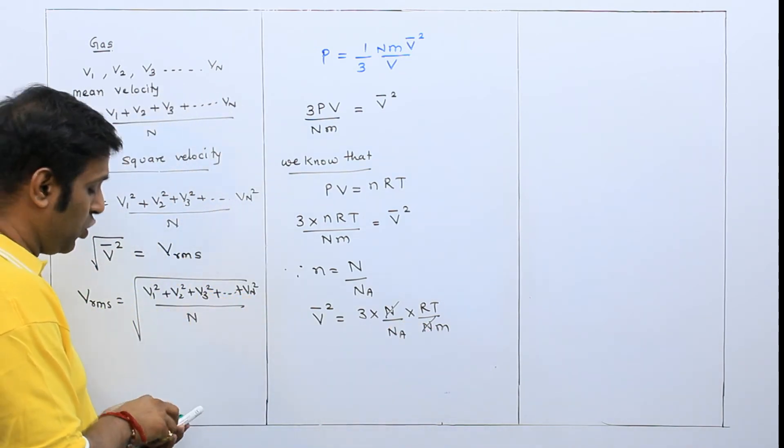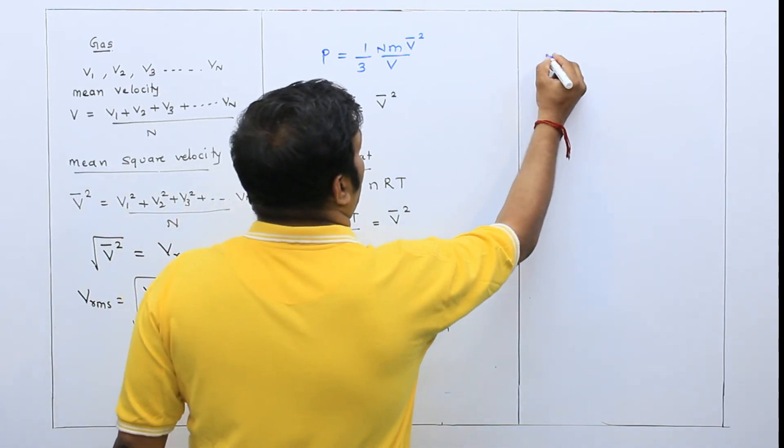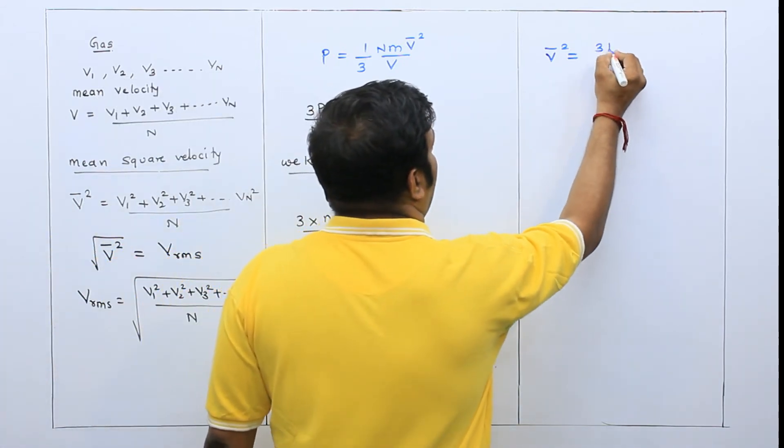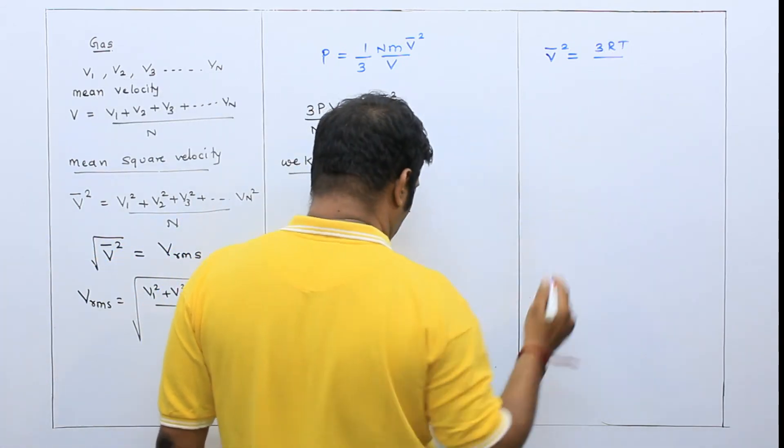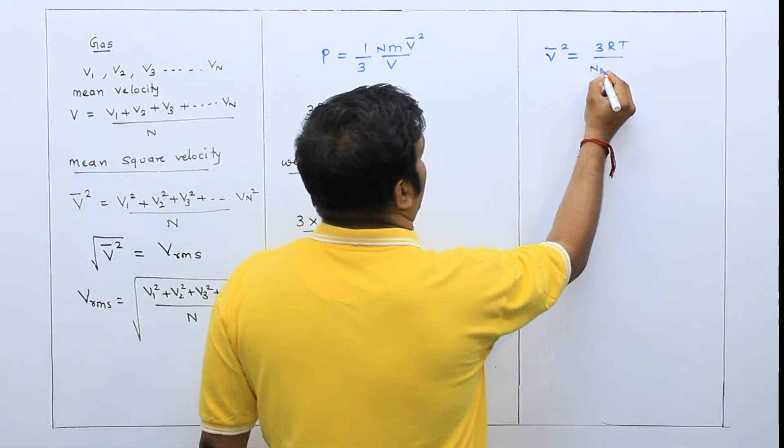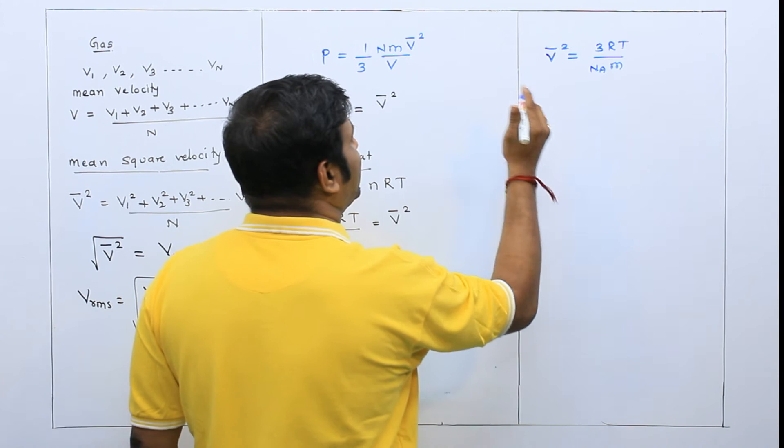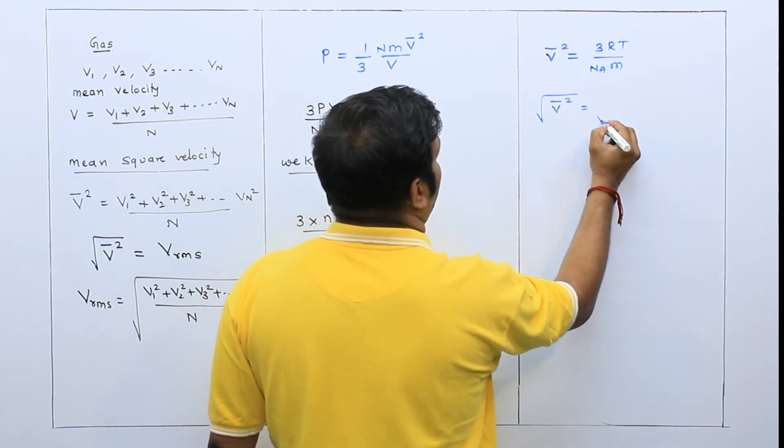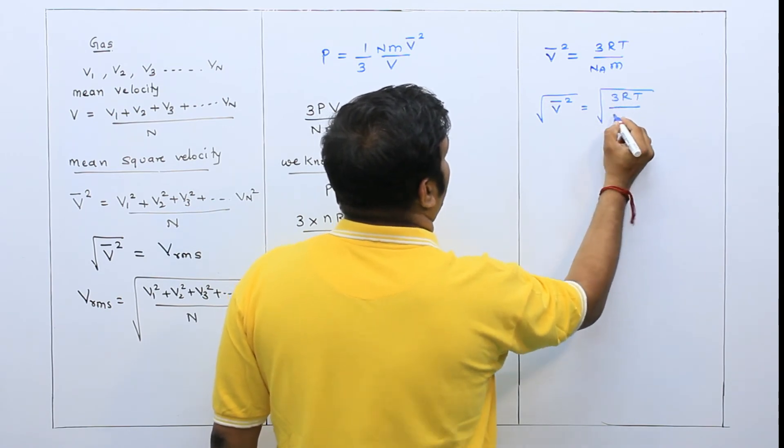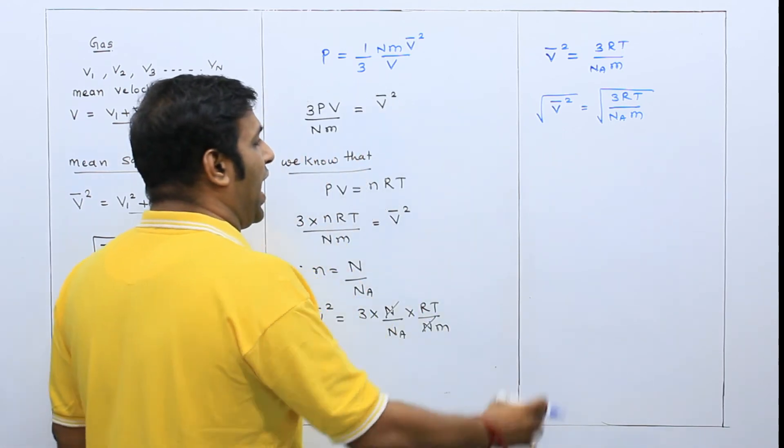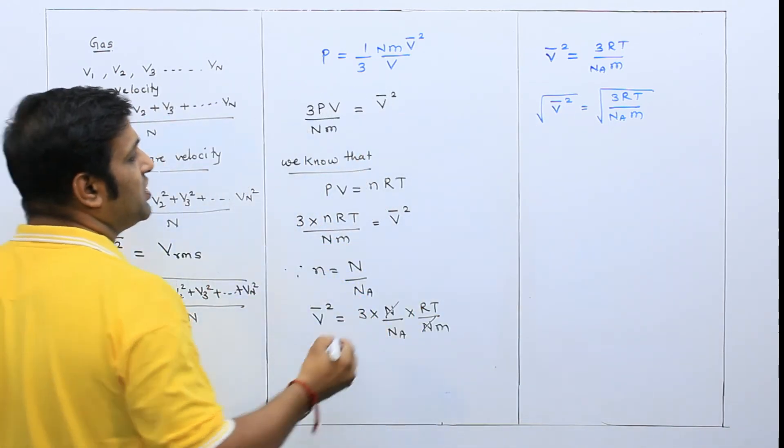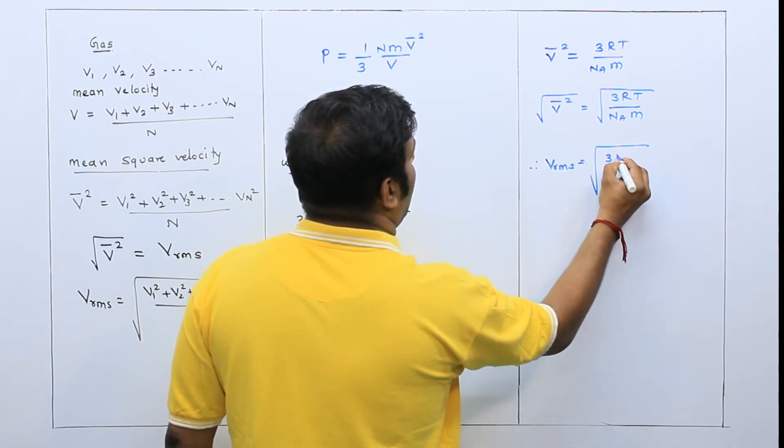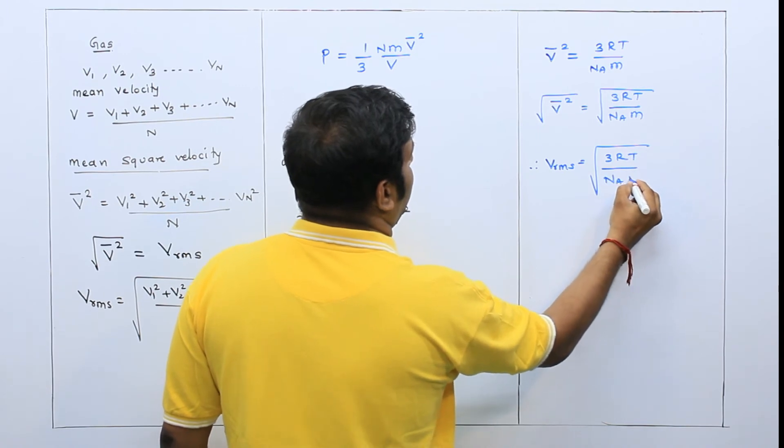And if this cancels, then I can write v bar square is equal to 3RT upon NA into M. NA into M. If I take root on both sides, then v bar square is equal to root of 3RT upon NA into M, and this is nothing but RMS velocity, that is V RMS.